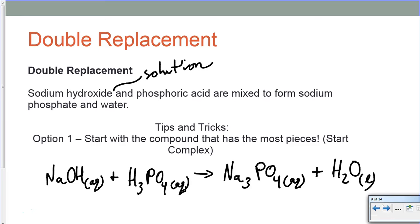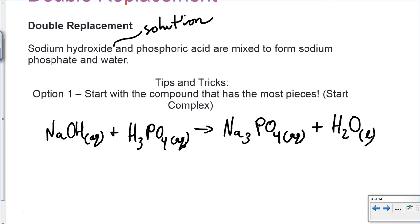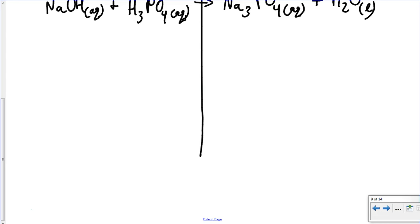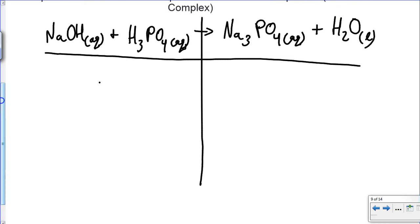Alright, so let's take a look at a double replacement reaction. A nice quick little example here. We have sodium hydroxide and phosphoric acid mixed to form sodium phosphate and water. We've already pre-written the formula for you. Again, this looks a little more complicated, but it brings up some important points that we have. We always start with the compound that has the most pieces involved. Start complex and hopefully it ends up working out for you. Now when we start taking a look at this, we separate just like before. We draw our line.